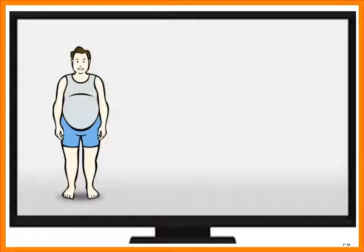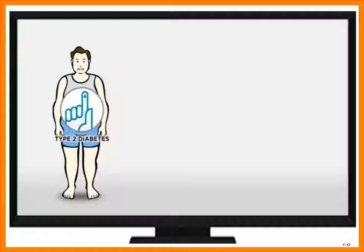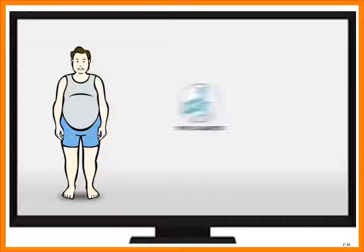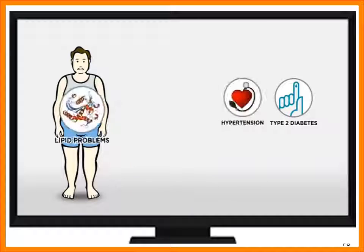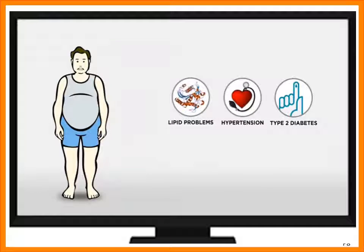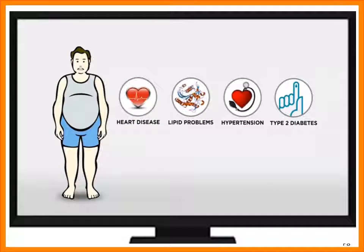When we talk about the diseases of obesity, we are talking about type 2 diabetes, hypertension, lipid problems — so blood fats if you will — heart disease. Those are sort of the big four if you will, that constitute what we classically call the metabolic syndrome.